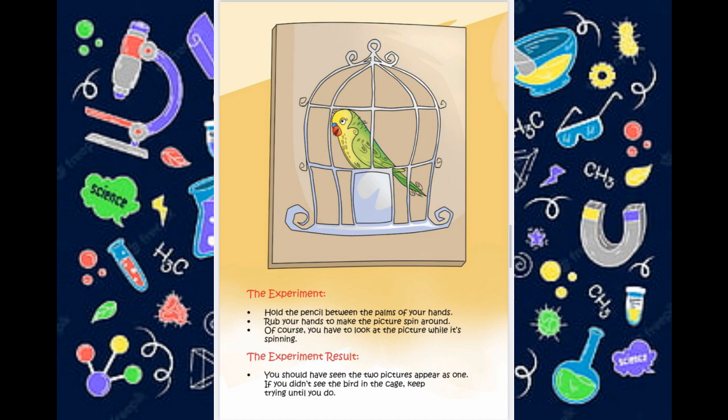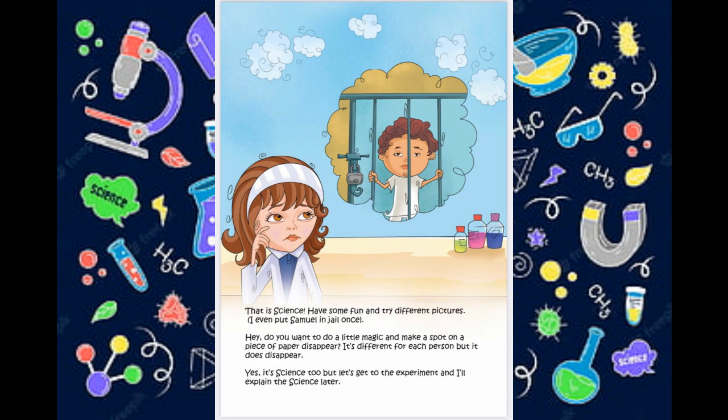The experiment result. You should have seen the two pictures appear as one. If you didn't see the bird in the cage, keep trying until you do. That is science. Have some fun and try different pictures. I even put Samuel in jail once.